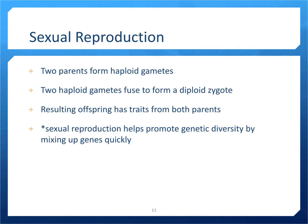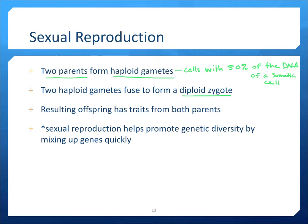Sexual reproduction requires two parents, and both contribute a haploid gamete. Haploid gametes contain 50% of the DNA found in a normal somatic cell. So if a normal human cell has 46 chromosomes, a haploid gamete has 23 chromosomes. Those two haploid gametes fuse to form a diploid zygote. The offspring from sexual reproduction has traits from both parents, and sexual reproduction increases genetic diversity more quickly than asexual reproduction because asexual reproduction generally just clones existing individuals.